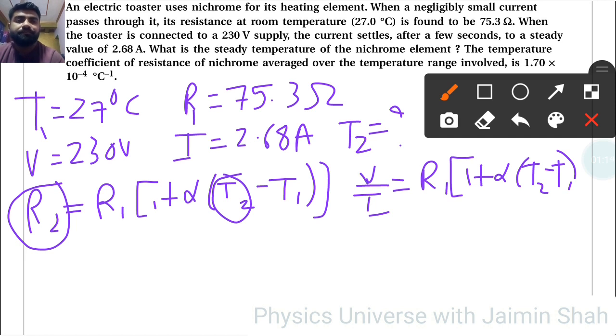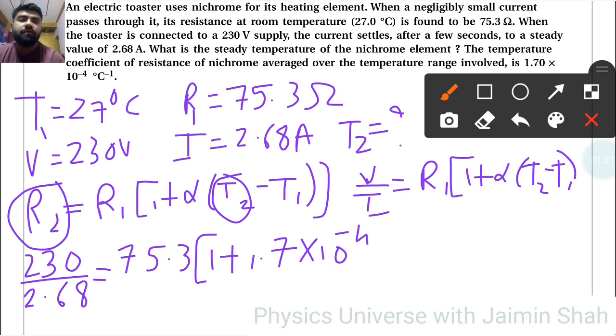So 230 divided by 2.68 equals 75.3 times (1 plus 1.7×10^-4 times (T2 minus 27)). T2 is what we need to find.